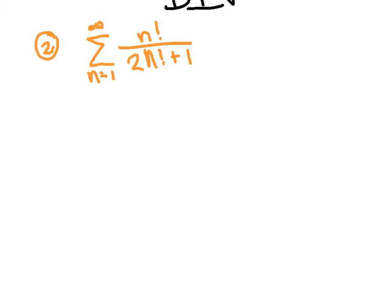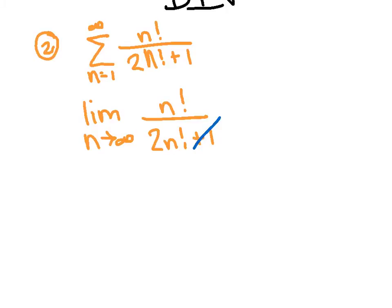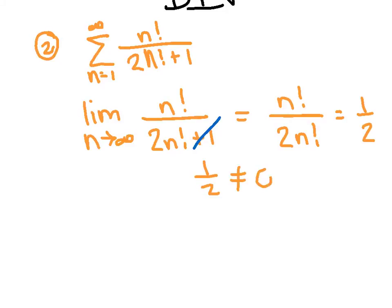Our second example has n factorial on top and two times n factorial plus one on the bottom. The nth term test asks what's happening as n approaches infinity. We can instantly kill the plus one because once n gets big enough it's irrelevant. So we're thinking in terms of n factorial over 2n factorial, which turns out to be one half — equal over equal, same over same, divide the coefficients. Now the trick is you're feeling pretty good, thinking maybe it converges because you got a finite number — but that would be true with sequences. This is a series. Because the limit turned out to be one half and that's not zero, this series instantly automatically diverges. No questions asked.